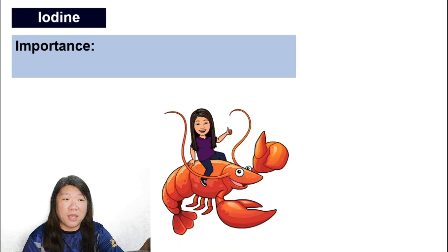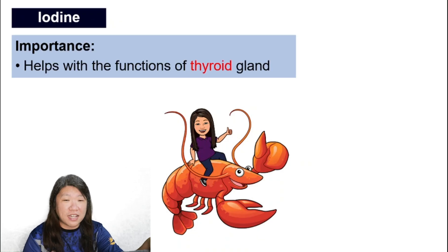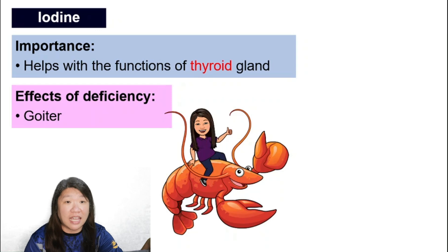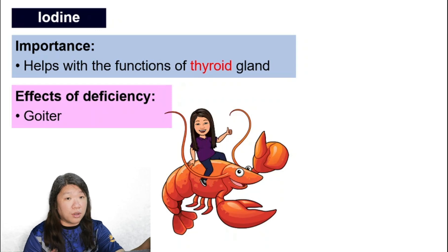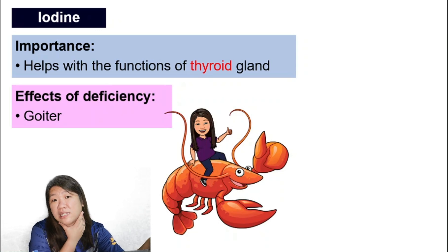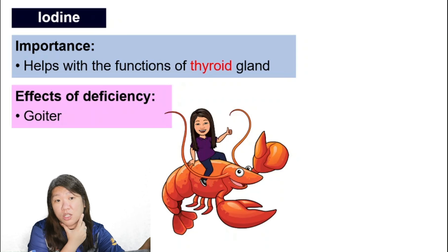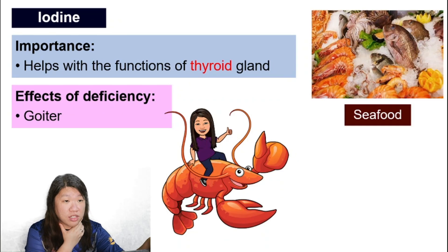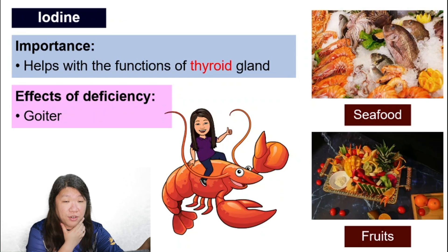Iodine is very important for the function of the thyroid gland. Not having enough iodine can cause goiter, a disease where the patient has a very swollen neck. Sources of iodine include seafood and fruits.